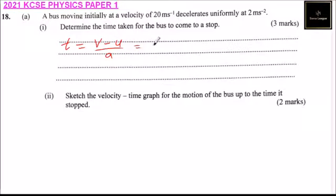So this is equal to the final velocity. Once it is stopped, it will be 0 minus initial velocity is 20 divided by acceleration which is 2 and this will give you minus, that is minus 10 seconds. Minus 10 seconds.